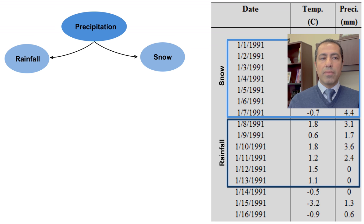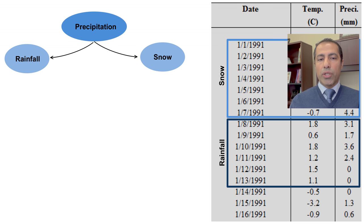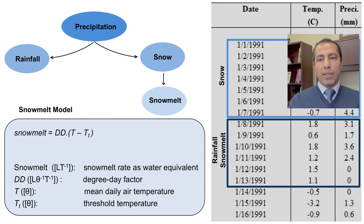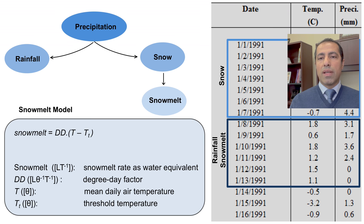In our Excel spreadsheet, the first seven days temperature is below zero, so we assume the entire precipitation falls as snow. When snow occurs, we have to keep track of snow accumulation and snow melt. We assume if temperature remains below zero there is no snow melt; when temperature goes above the threshold, snow melt starts. Even when temperature is below zero snow melt occurs in reality, but this simplifying assumption allows us to easily calculate snow melt.